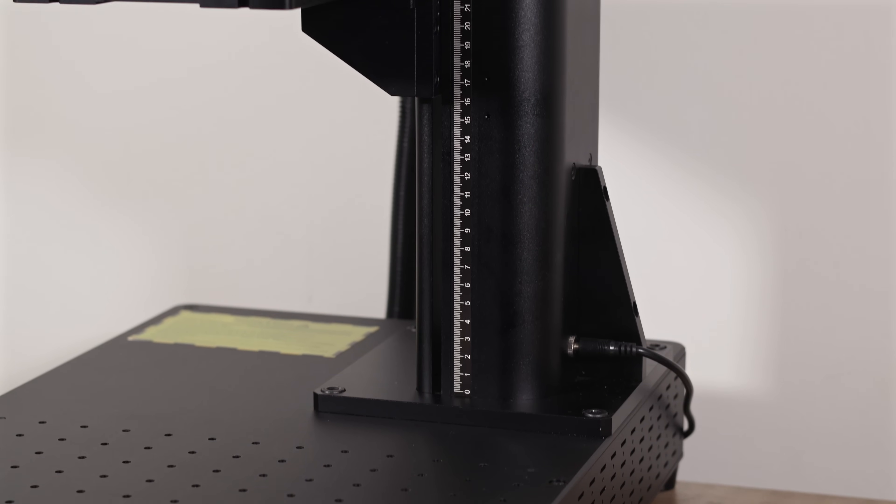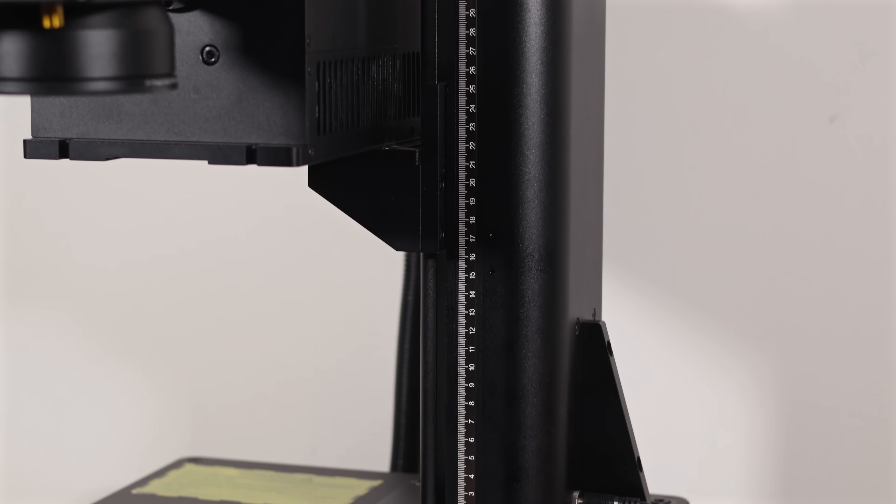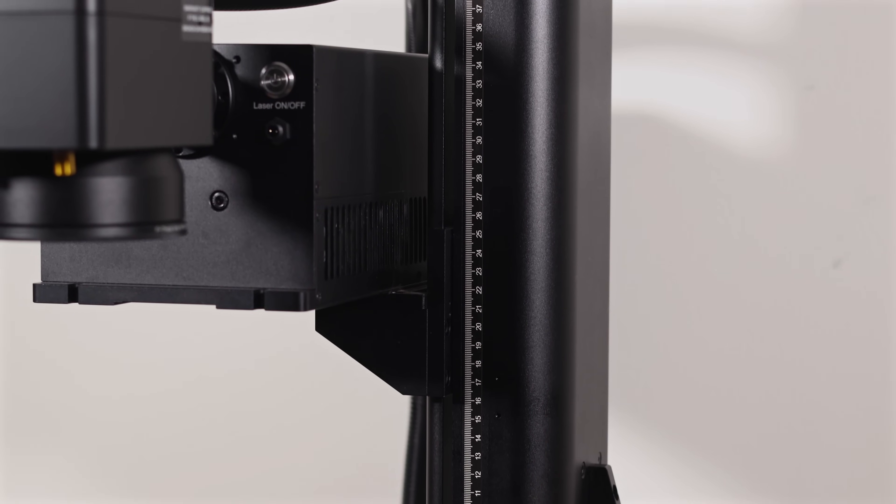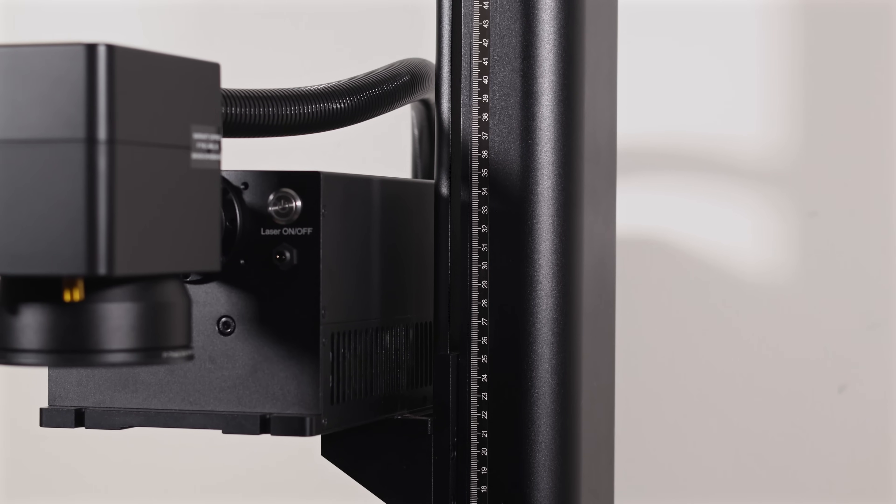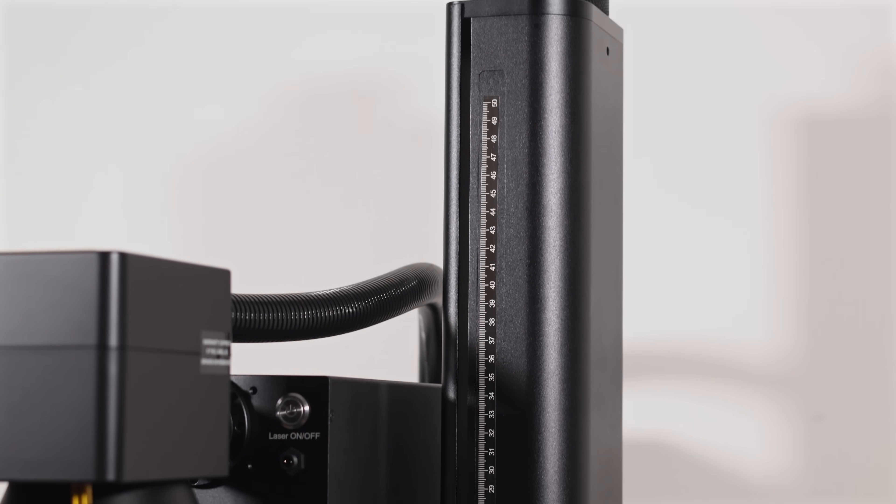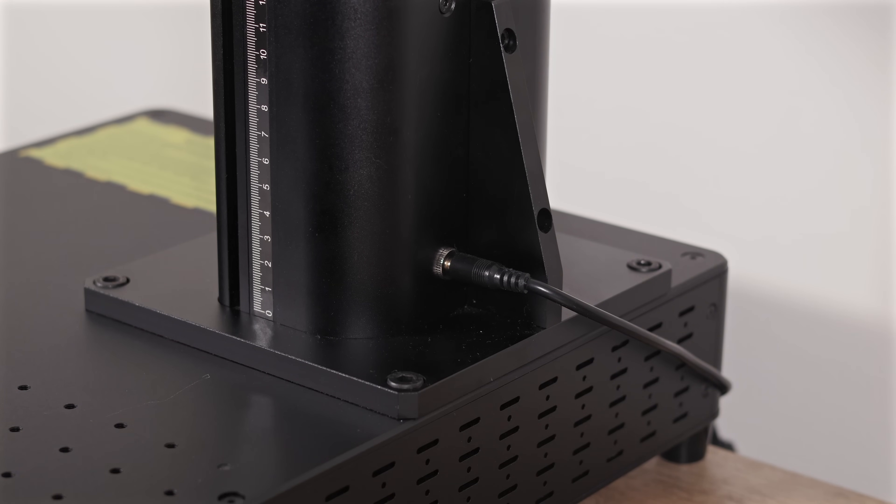The second key part of the CommMarker laser is the arm that holds the laser head. The Omni-1's arm is incredibly sturdy and features a measuring guide for easy focusing. You can adjust it using a top knob for manual tweaks or a motor for precise movements. It's powered by a separate cable that connects to the base.